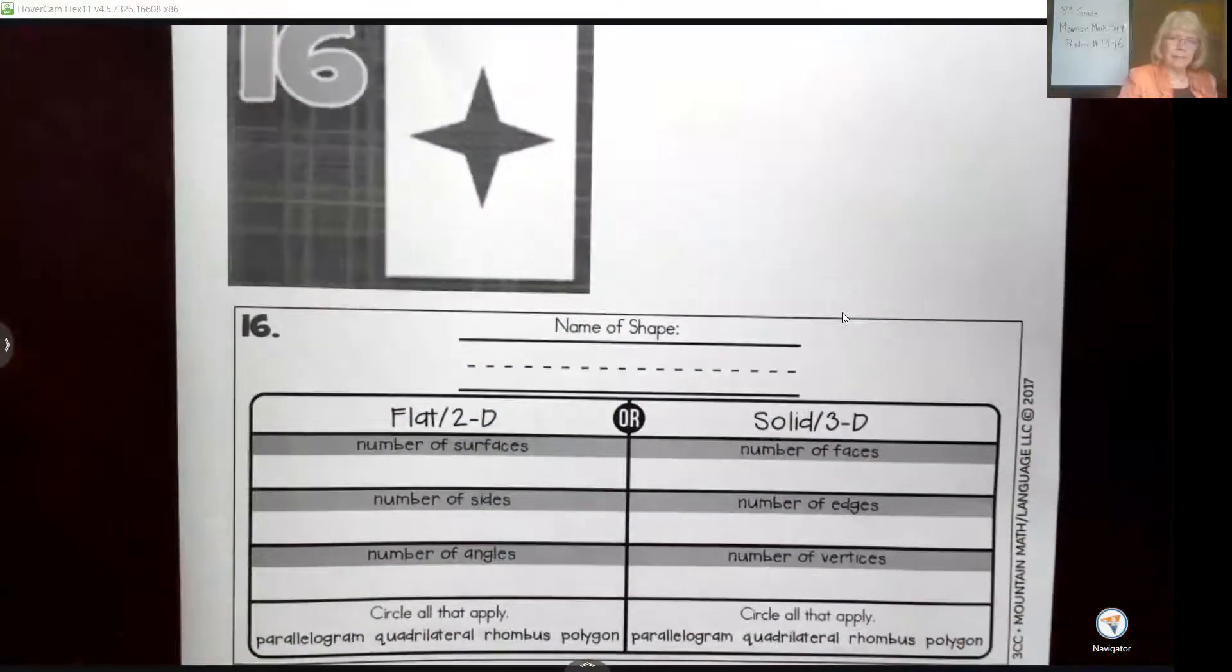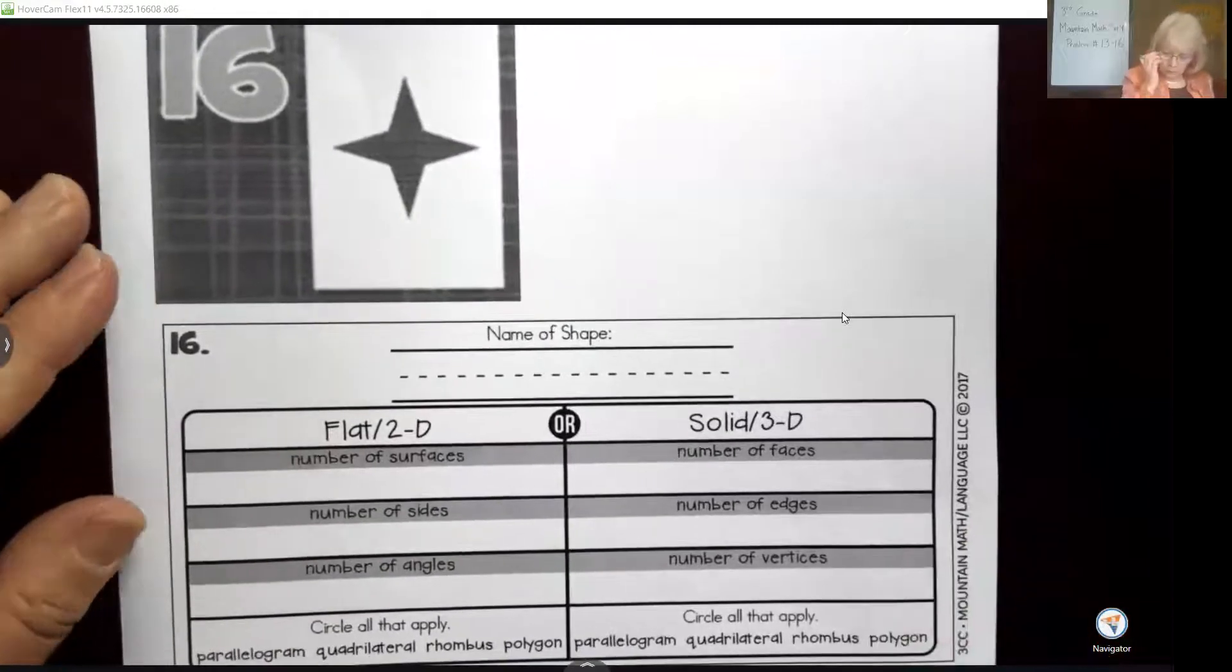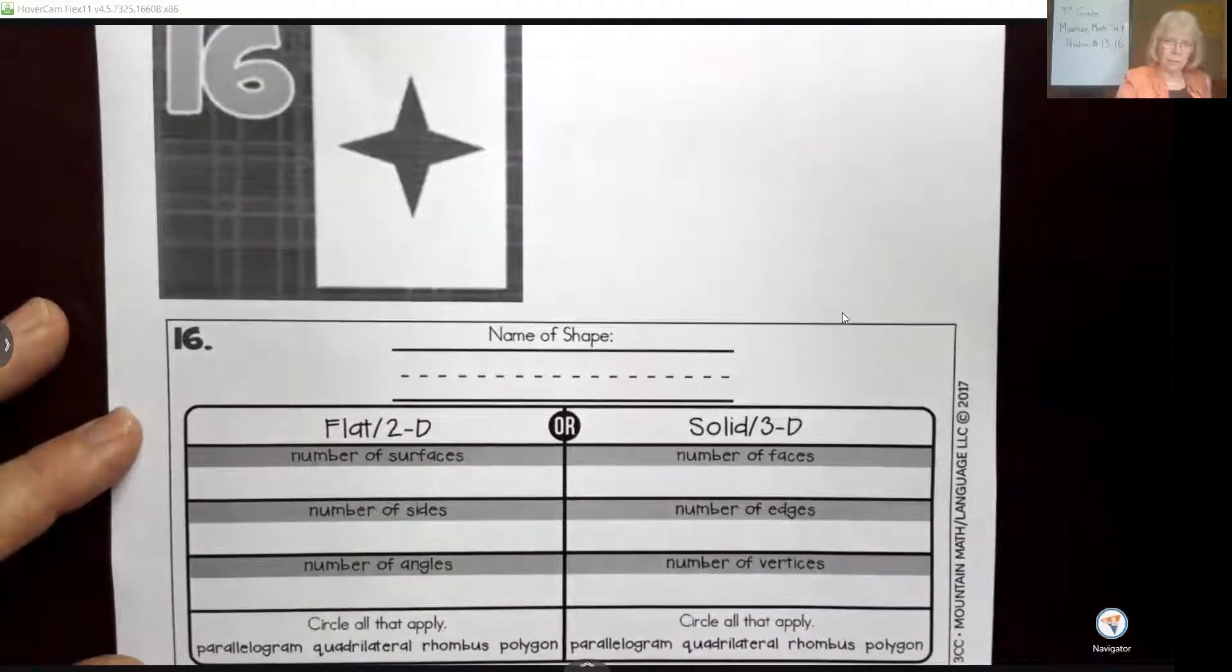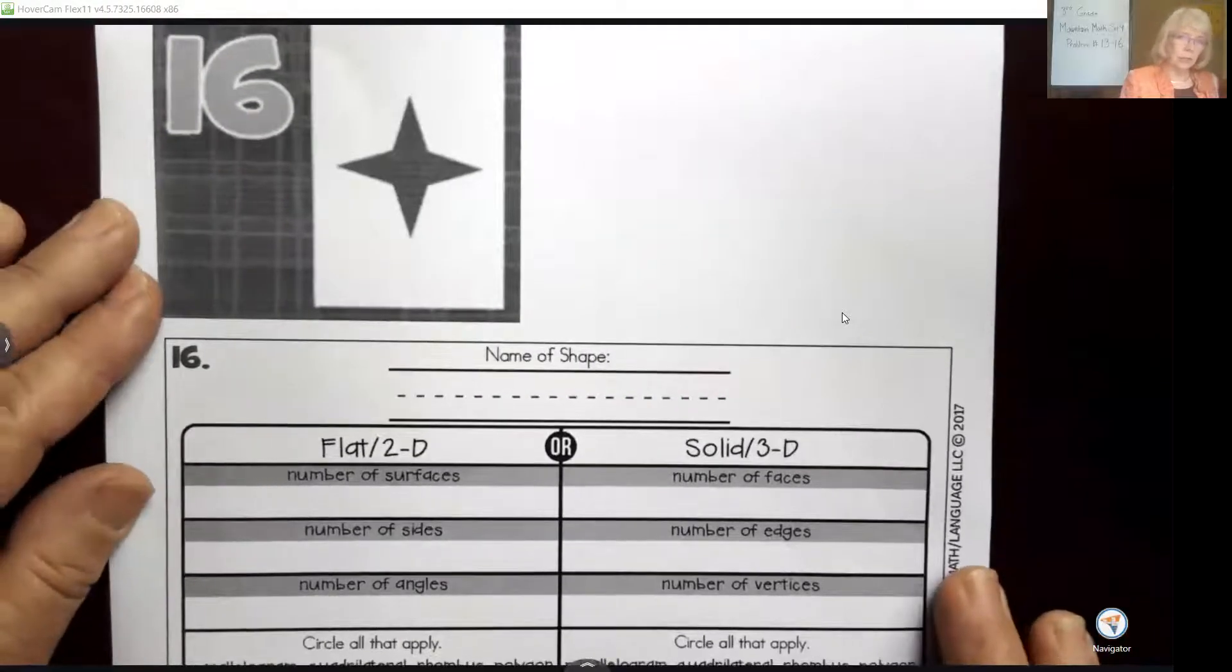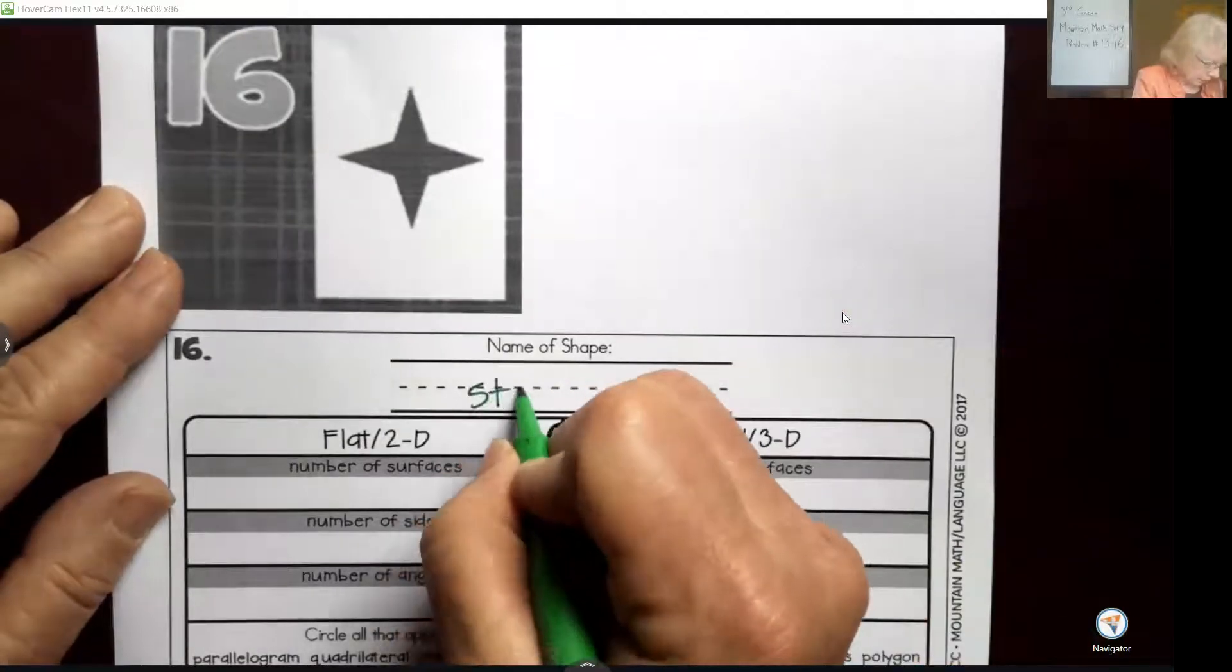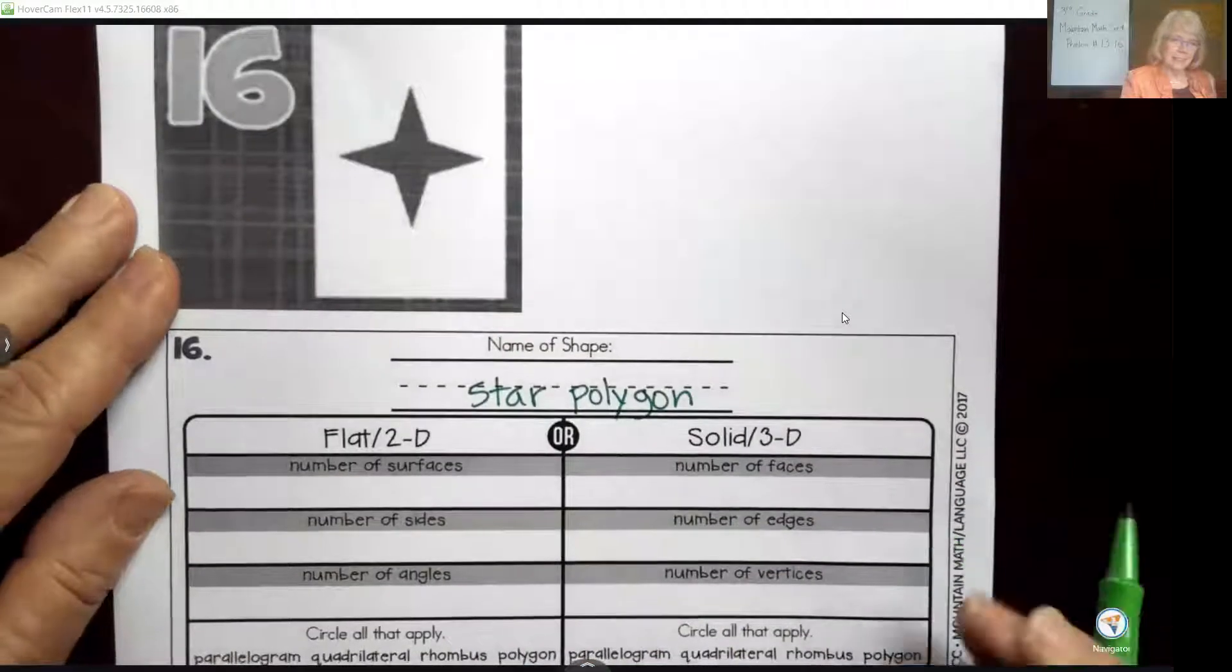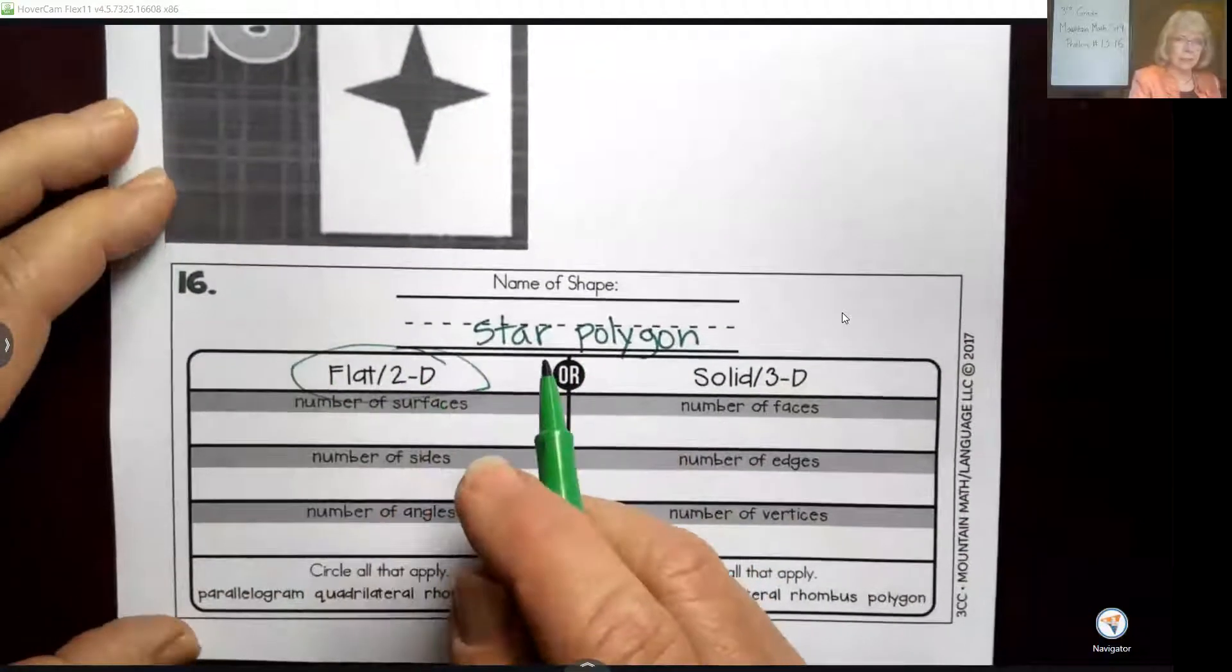We have a shape here, and they want us to name the shape and then decide: is it flat and two-dimensional, or three-dimensional? This shape looks like a star. We're going to call it a star polygon to help people know that we're talking about a flat object. It is flat, which means it's two-dimensional. It's not like an ice cream cone or a cube, something that has three dimensions to it.